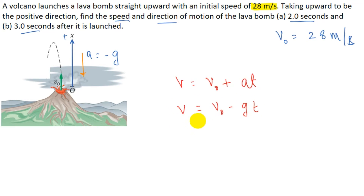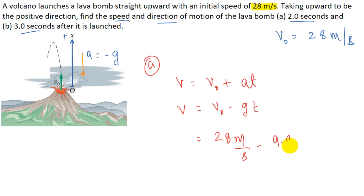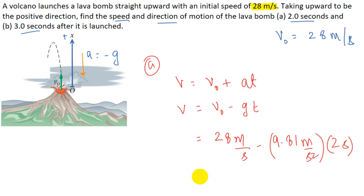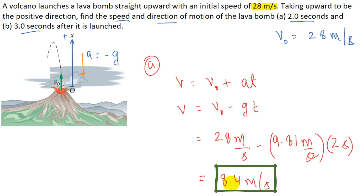For part a at t = 2 seconds: v = 28 m/s - (9.81 m/s²)(2 s) = 8.4 m/s. The positive sign tells us the lava bomb is moving in the upward direction at t = 2 seconds.